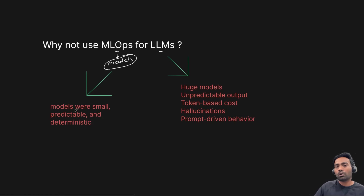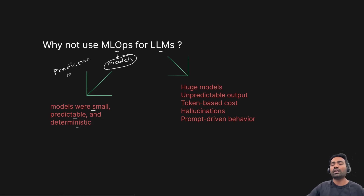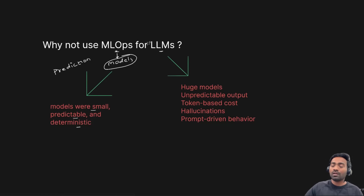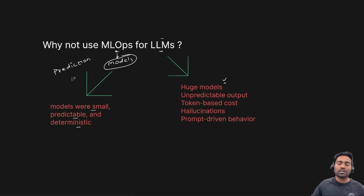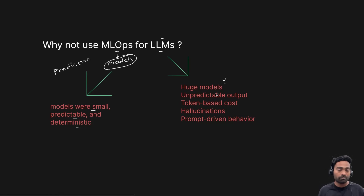MLOps deals with models that are small, predictable, and deterministic in nature. Best examples: a weather prediction model or the Netflix recommendation engine. But when it comes to large language models, they are huge models. Your Netflix recommendation engine deals with only Netflix user information, but large language models are trained on billions of parameters. Take GPT-5 or the LLAMA model — they are pretty huge models.